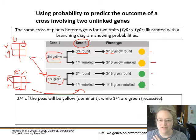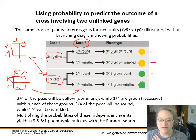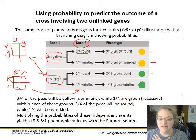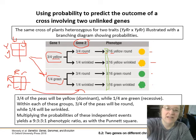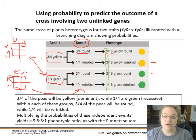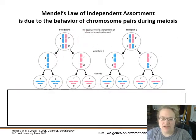Working through all combinations with the product rule gives us the same 9:3:3:1 ratio, all out of sixteen. The way to check yourself is to add up the column: 9 + 3 + 3 + 1 equals 16. Yes it does — so we're good to go.